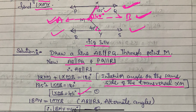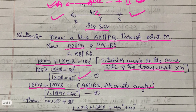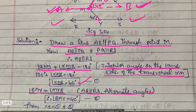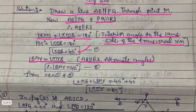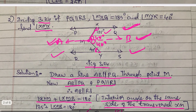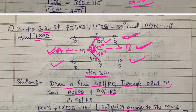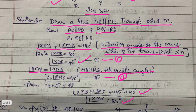Since XMB is 45 degrees, angle BMY equals angle MYR as alternate angles (AB parallel to RS). Since MYR is 40 degrees, BMY is also 40 degrees. Adding the two angles: angle XMY equals 45 plus 40 equals 85 degrees. This can be solved quickly using the construction of line AB.